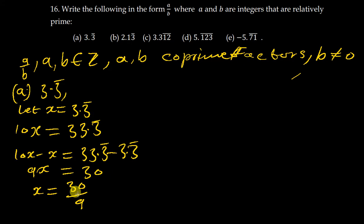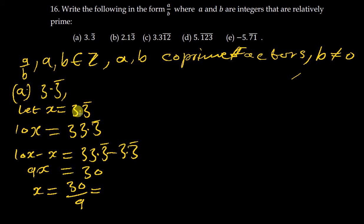The value of x therefore becomes 30 over 9. The question says a and b should be in their lowest term, so we find the number that can go into both 30 and 9, which is 3. So 3 into 30 gives us 10, and 3 into 9 gives us 3. The final answer is 10 over 3.